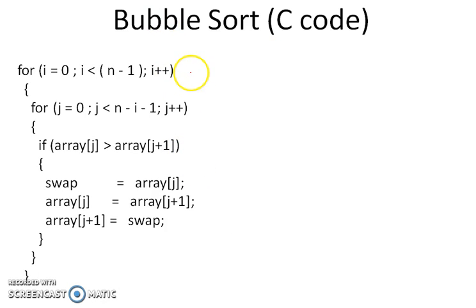You require two nested for loops. The first for loop that is controlled by variable i will run for n-1 number of times. Now inner loop that is j will run for n-i-1 number of times. Every time the basic concept of bubble sort is to compare two adjacent numbers.